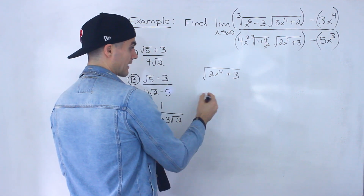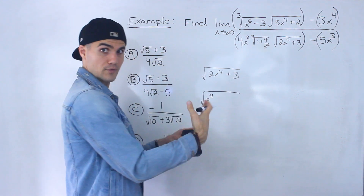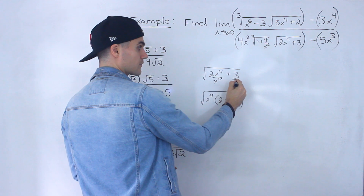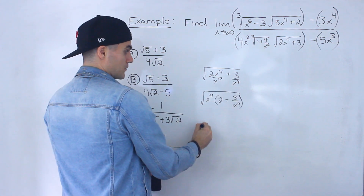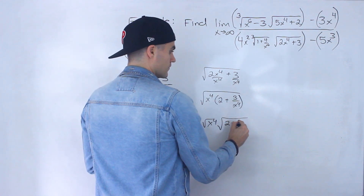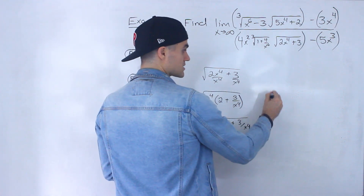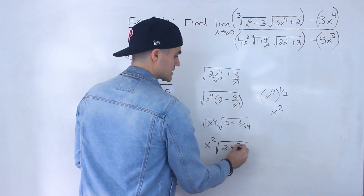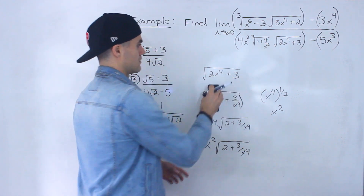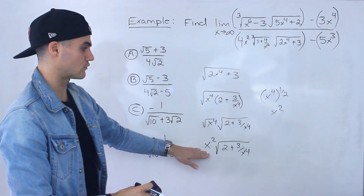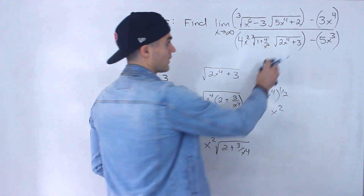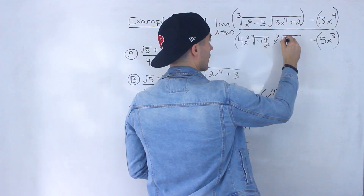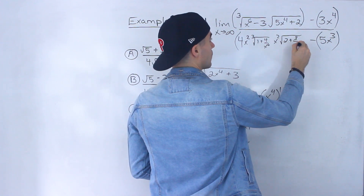Now I'm going to do the exact same thing for everything else. I'm going to factor out x to the four within the square root, so we'd be left with two plus three over x to the four. When we factor it out, everything gets divided by x to the four. From here, we can split these up. The square root of x to the four is x to the four to the power of one-half, which is x squared. So this term converts to x squared times the square root of two plus three over x to the four, and we still have that minus.